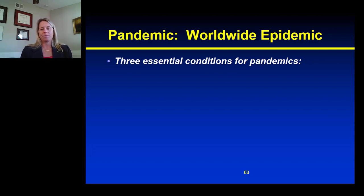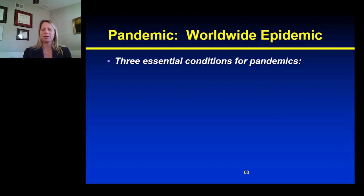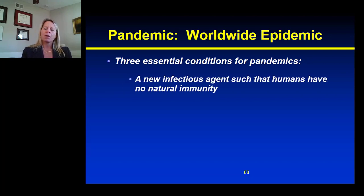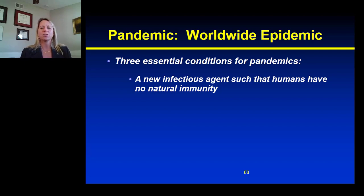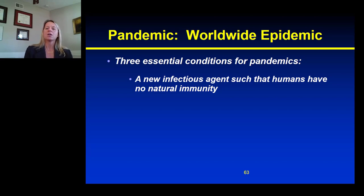Now I want to define pandemic. Pandemic is otherwise referred to as a worldwide epidemic, but that isn't always the most correct way to define a pandemic. According to some, there are three essential conditions for a pandemic to occur. The first is when a new infectious agent presenting in the community occurs in humans who have otherwise no natural immunity to that disease.